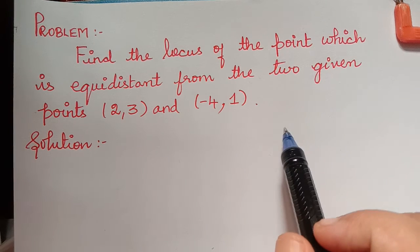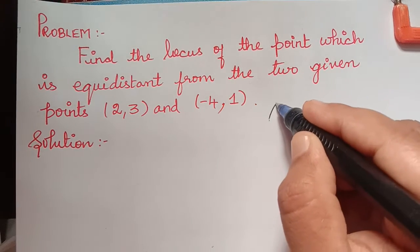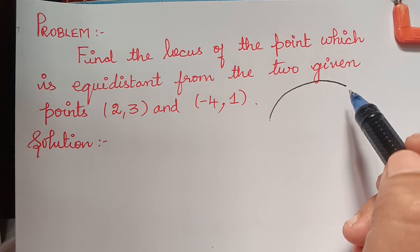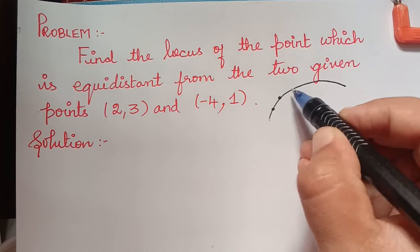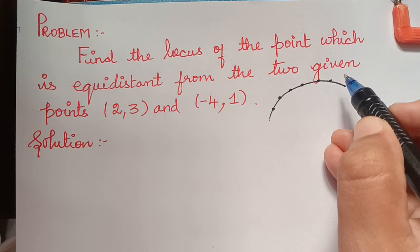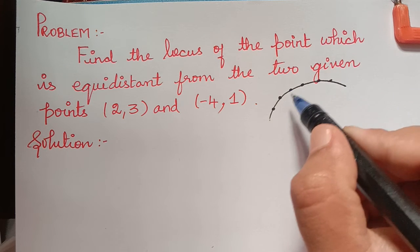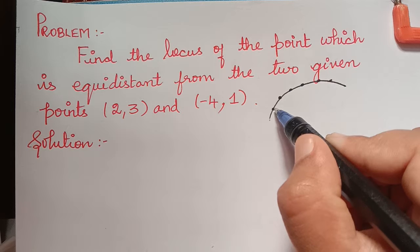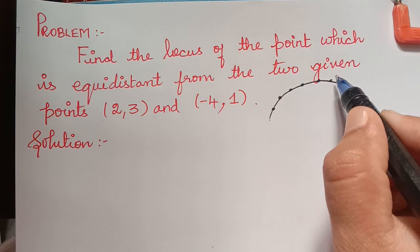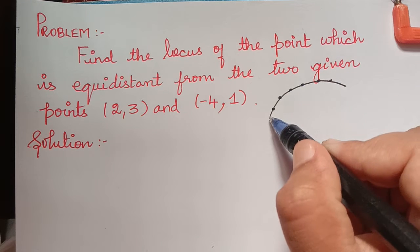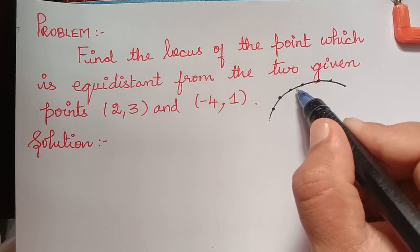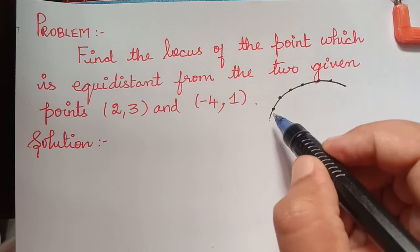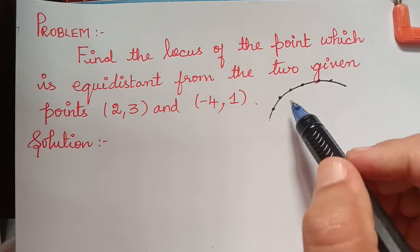If a curve can be defined by a geometrical property common to all points on it, then there will be an algebraic relationship which is satisfied by the coordinates of the points on the curve. Such an algebraic relationship is called the equation of the curve, and all the points whose coordinates satisfy this algebraic equation lie on that curve.